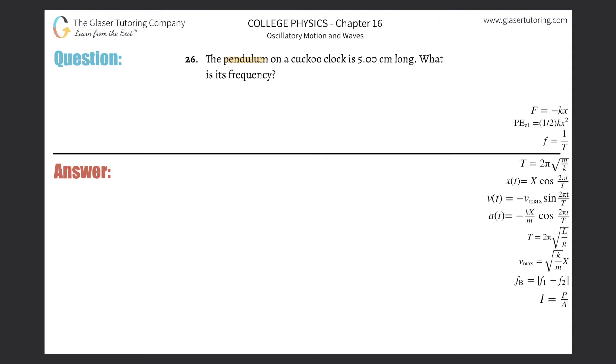Number 26. The pendulum on a cuckoo clock is five centimeters long. What is its frequency? First, they're telling us the length of the pendulum's arm, L. I'm going to convert that into meters, so this is 0.05 meters. That's the length of the pendulum's arm.